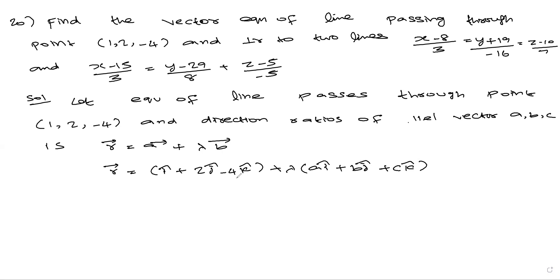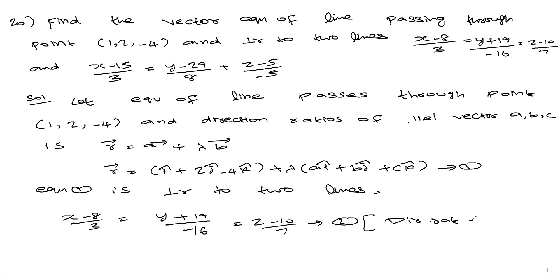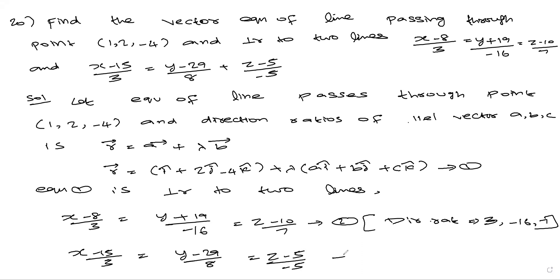Since equation one is perpendicular to two lines, for the first line (x-8)/3 = (y+9)/(-16) = (z-10)/7, the direction ratios are 3, -16, 7. For the second line (x-15)/3 = (y-29)/8 = (z-5)/(-8), direction ratios are 3, 8, -5.